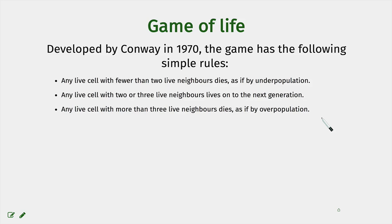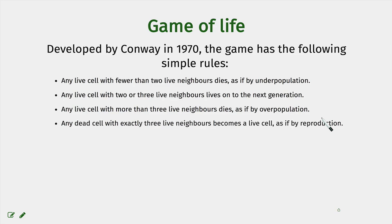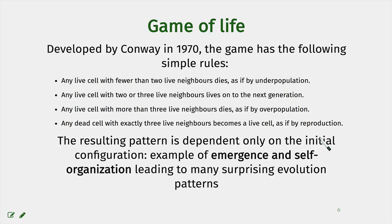So when you look at these rules, the cell dies if it has very few neighbors or if it has too many neighbors. Then, if there is a dead cell that has exactly three live neighbors, it becomes a live cell — essentially representing reproduction. What is very interesting is that with these very simple rules, you can get very interesting and surprising evolution patterns. This game essentially represents an example of emergence and self-organization.